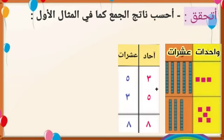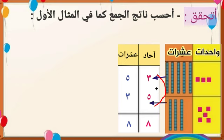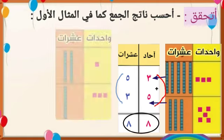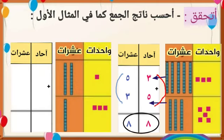المثال الأول: ثلاث واحدات وخمس عشرات، العدد ثلاثة وخمسون، زائد خمس واحدات وثلاث عشرات، العدد خمسة وثلاثون. إذن: ثلاثة زائد خمسة يساوي ثمانية، وخمسة زائد ثلاثة يساوي ثمانية أي ثمانية عشرات. أحسنتم.